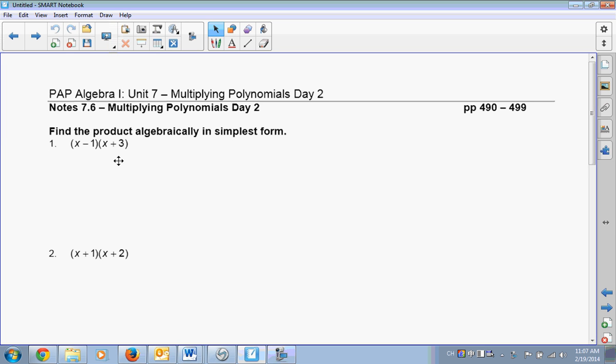Okay, so the difference between today and yesterday is that, obviously, this time there are two terms being distributed into two terms. So this is a binomial times a binomial, okay?